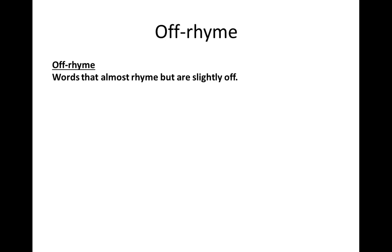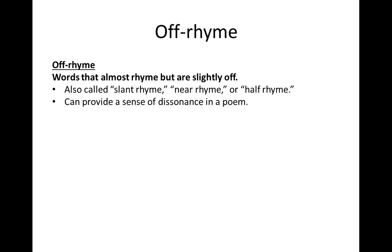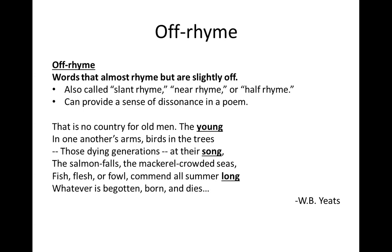Off rhyme occurs when words almost rhyme with each other but are slightly off — maybe the vowel sound or the consonant sound is just slightly different. It can also be called slant rhyme, near rhyme, or half rhyme. Off rhymes can provide a sense of dissonance in a poem, making you feel just a little off-kilter where you'd otherwise expect a full rhyme. From W.B. Yeats: 'That is no country for old men. The young in one another's arms, birds in the trees — those dying generations at their song, the salmon-falls, the mackerel-crowded seas. Fish, flesh, or fowl, commend all summer long, whatever is begotten, born, and dies.'